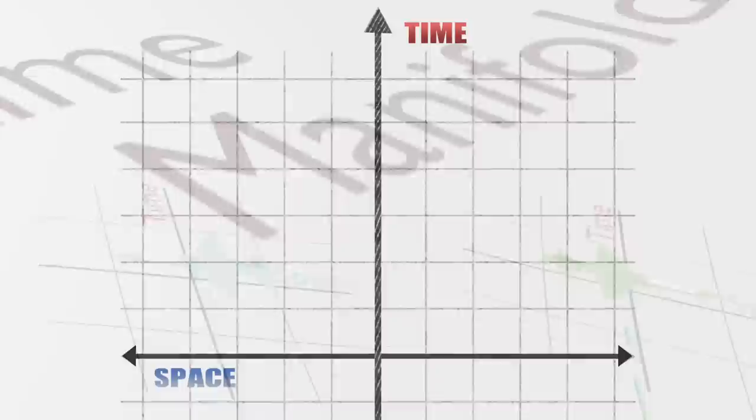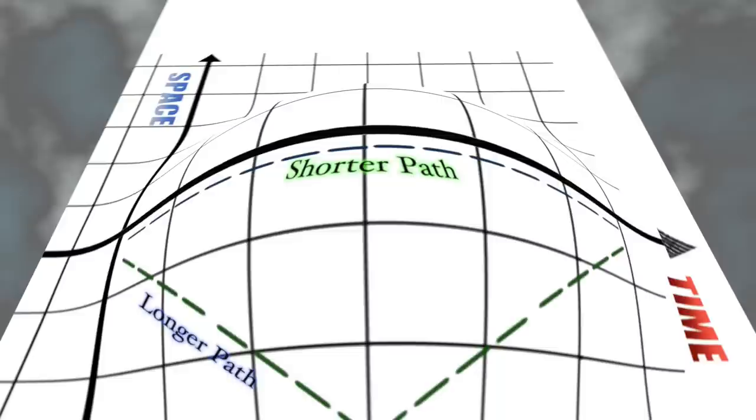In flat spacetime, a shorter path always requires an act of acceleration. But this fact does not generalize to curved spacetime, where the shorter path can belong to the inertial twin.